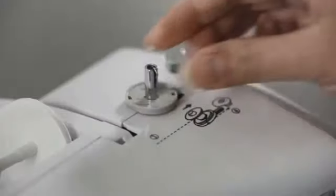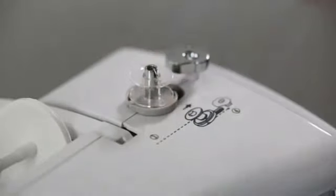Power on the machine. Install the bobbin on the fixed shaft. Put the thread line on the thread bar and cover it with the thread line cover.